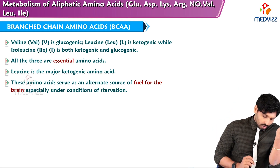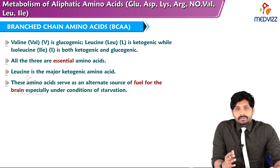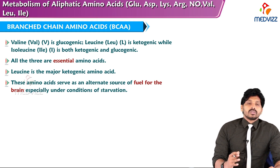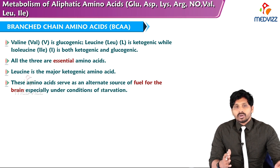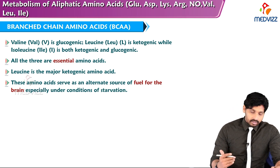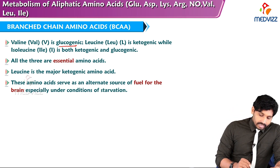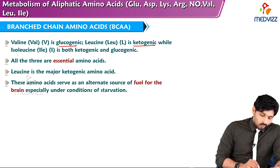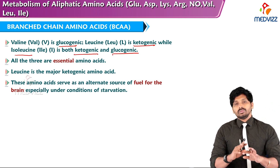All three branched chain amino acids are essential in nature, so we do not worry about their synthesis — only the catabolism part we have to concentrate on. Valine is glucogenic, leucine is ketogenic, whereas isoleucine is both ketogenic and glucogenic.